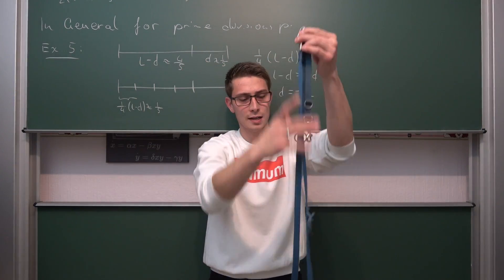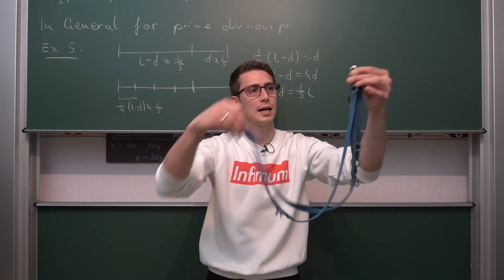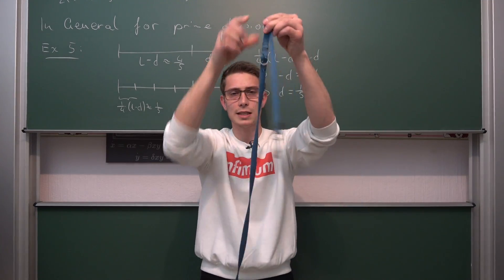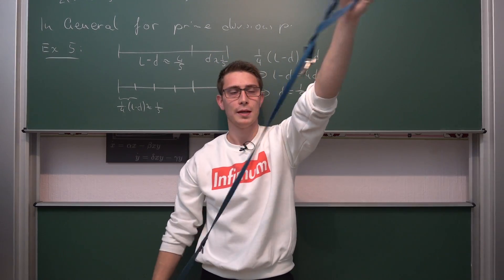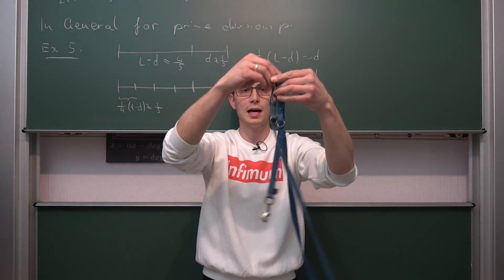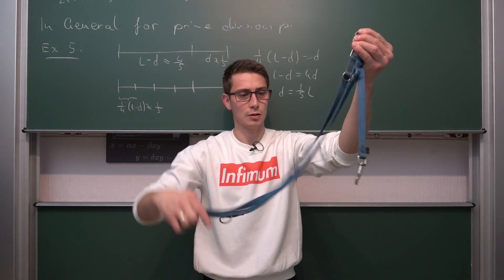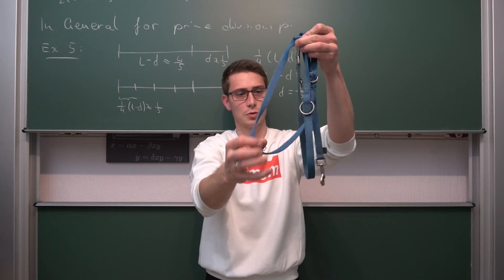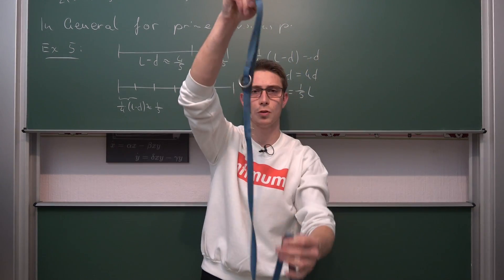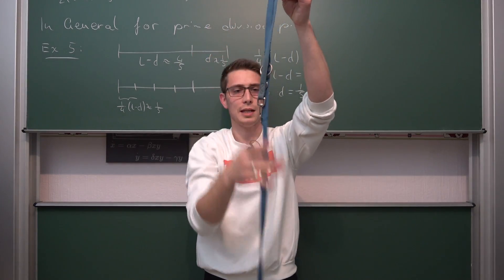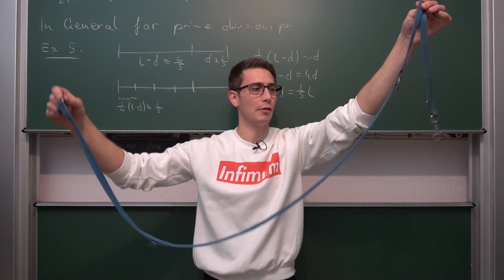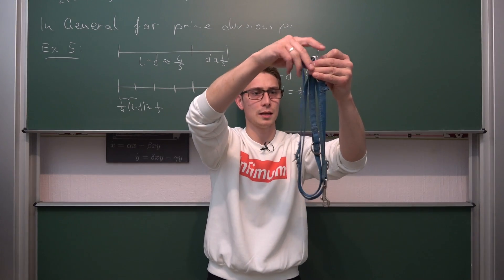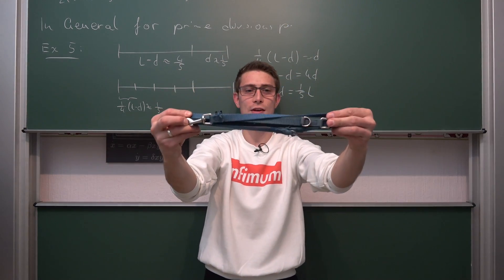Now this right here is going to be one fifth — our new one fifth — and this right here is four fifths. Let's go through the process again: dividing it, halving it, and halving it again. Grabbing here, this right here is our new one fifth. We divide it up yet again, and we are already nearly done — this converges really quickly. I think it converges even faster for any prime p bigger than 5.